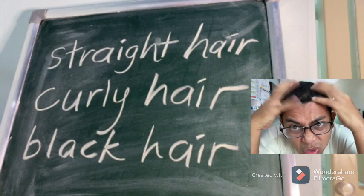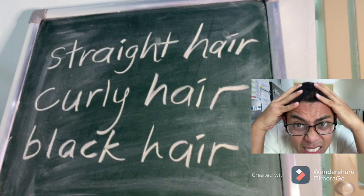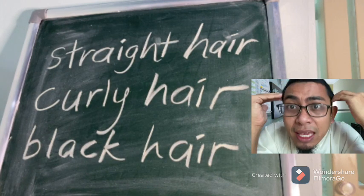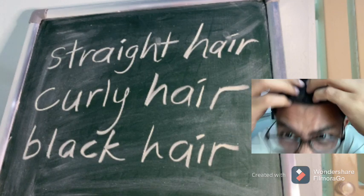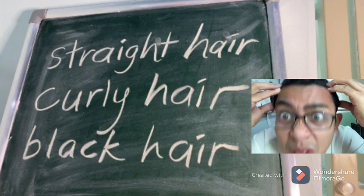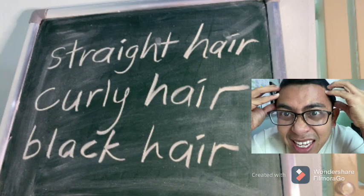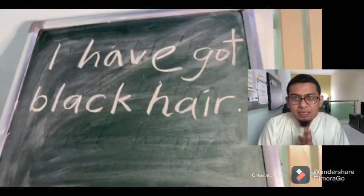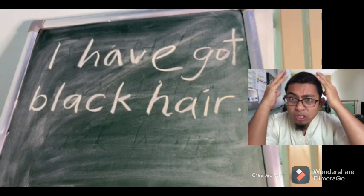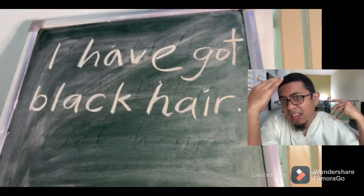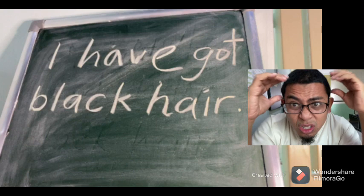Class, now I want you to touch your hair. For example, I have straight hair or curly hair or black colored hair. For me, I've got short and black hair - short is my name and my hair is still black. Example sentences: I have got black hair, I have got short hair, I have got long hair, or I have got long black hair.